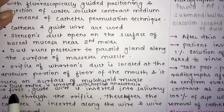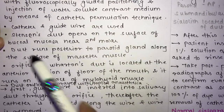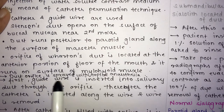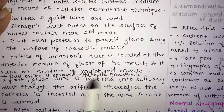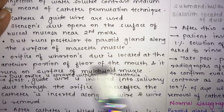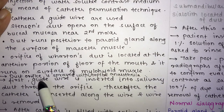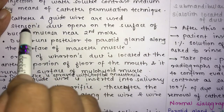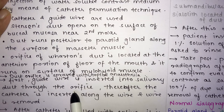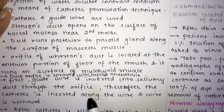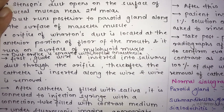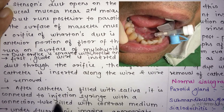The duct orifices are sprayed with topical anesthesia. A guide wire is then inserted into the salivary duct through the orifice, followed by insertion of a catheter along the wire, after which the wire is removed. Once the catheter is filled with saliva, it is connected to an injection syringe via a connection tube filled with the contrast medium.